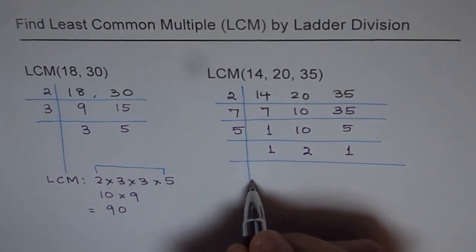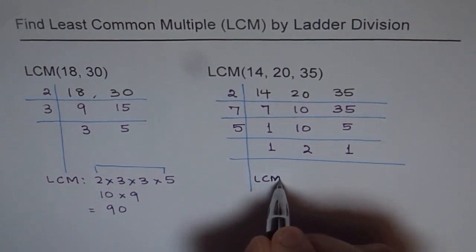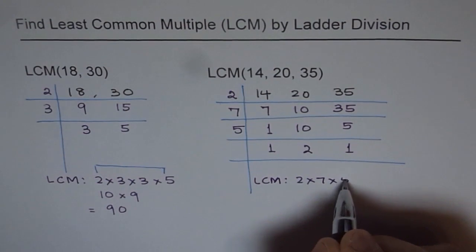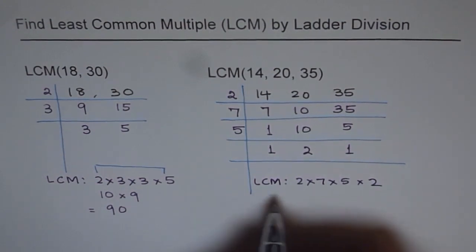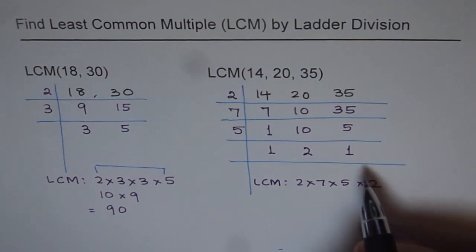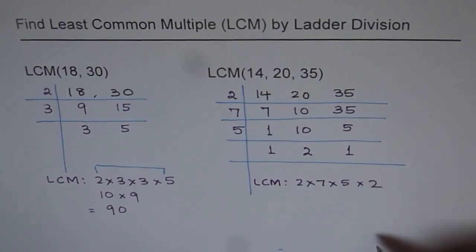LCM is product of these prime numbers. We can write LCM as 2 times 7 times 5 times 2. Write down all the prime numbers. You could have written 1. Remember one thing: 1 truly is not a prime number. Prime numbers are numbers which have at least 2 factors.